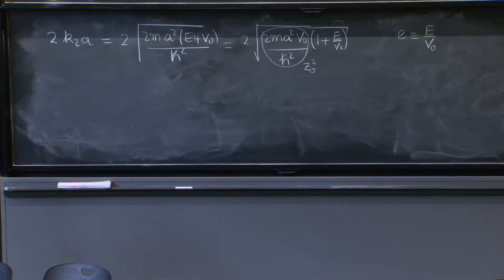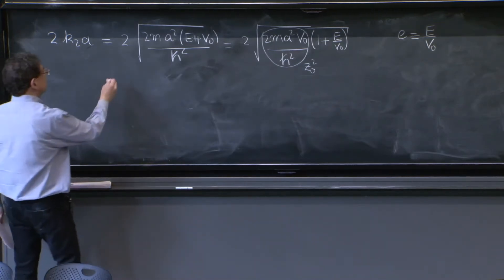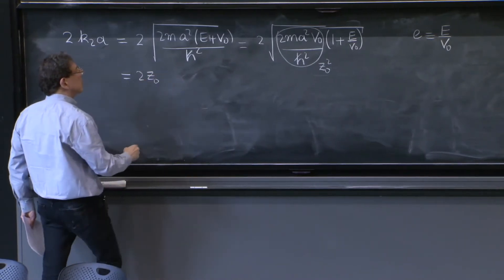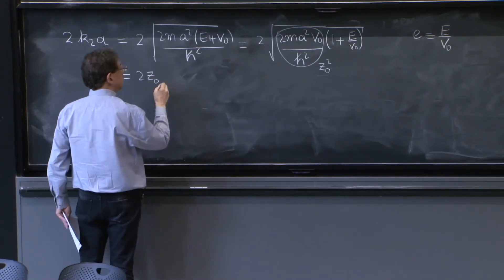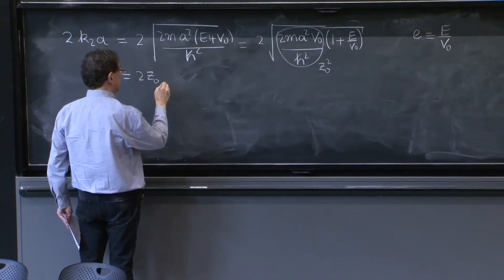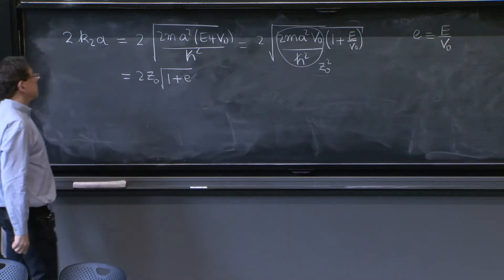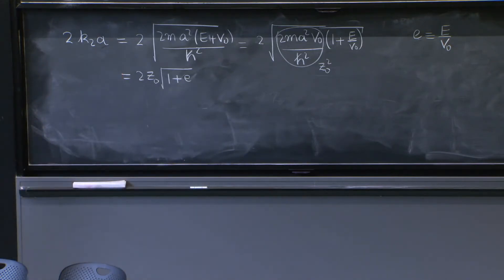This is the unit-free number that tells you how deep or profound is your potential and controls the number of zeros. So at this moment, this is simply 2 z0, because the square root is there and takes the z0 squared out of z0, square root of 1 plus e, which is kind of nice.